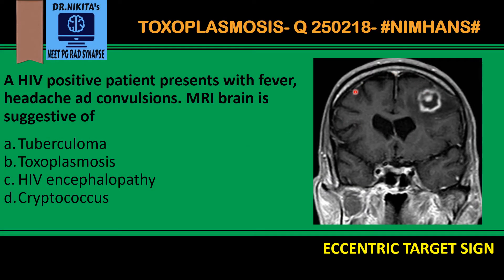This is a contrast enhanced MRI of the brain in an HIV positive patient presenting with fever and convulsions. On the contrast enhanced MRI, we see a lesion where white indicates enhancement. There is peripheral or ring enhancement, plus an additional enhancement located eccentrically within this lesion.